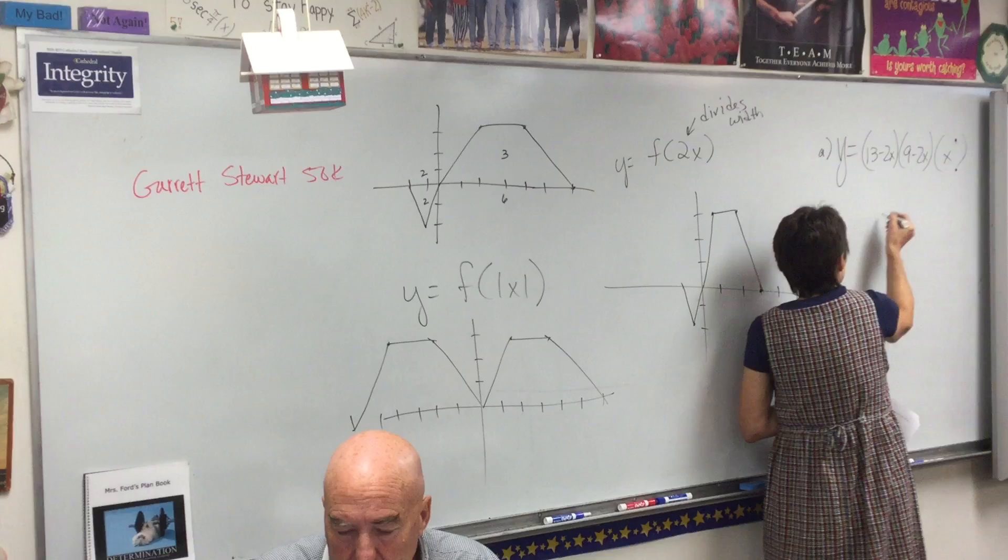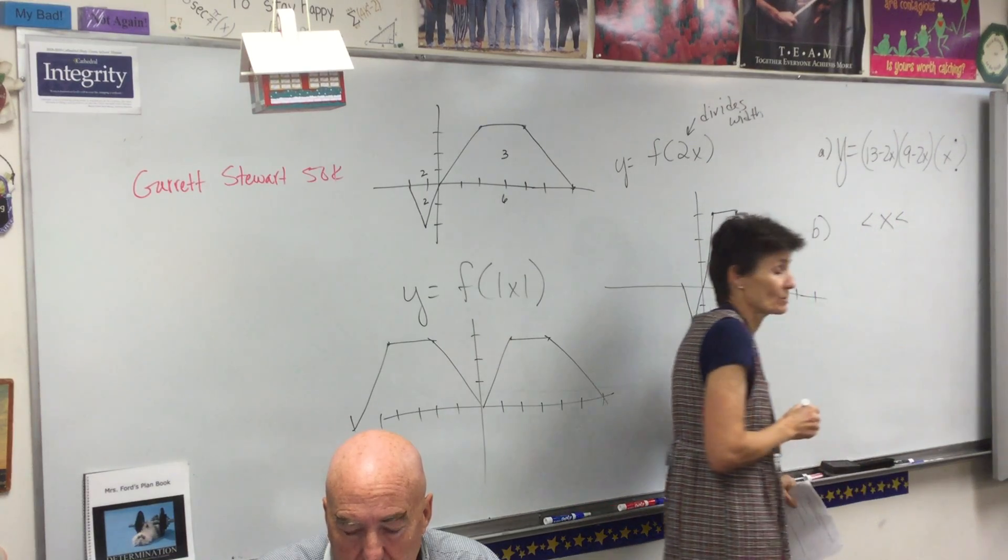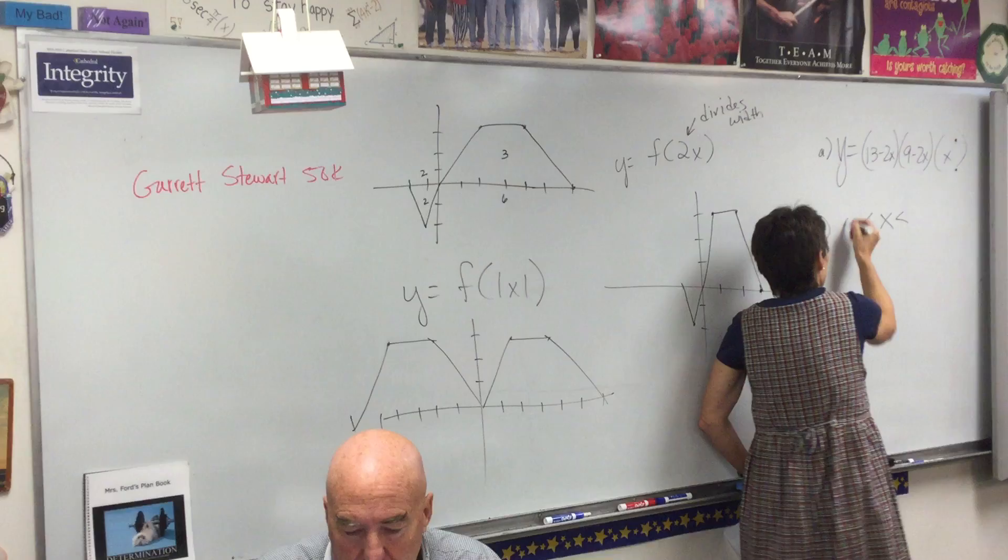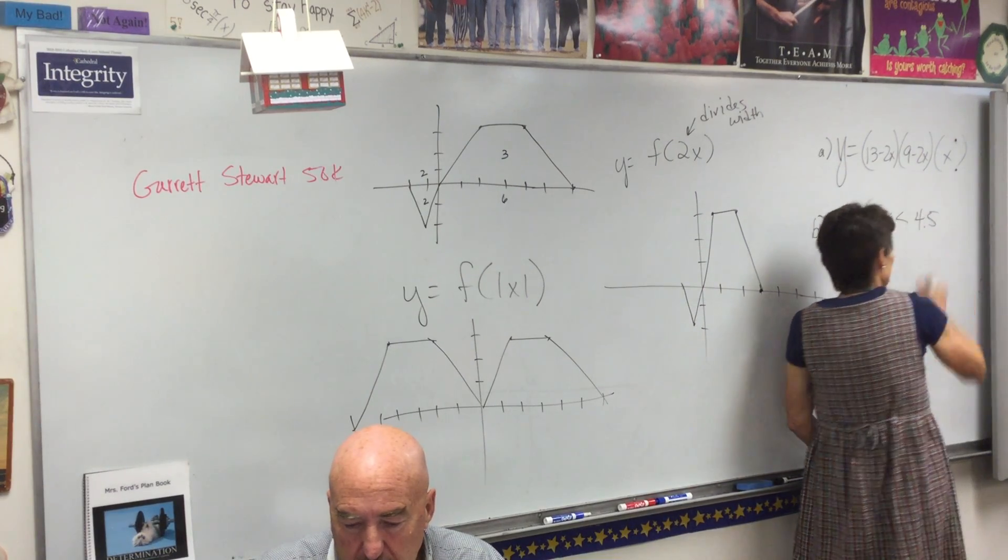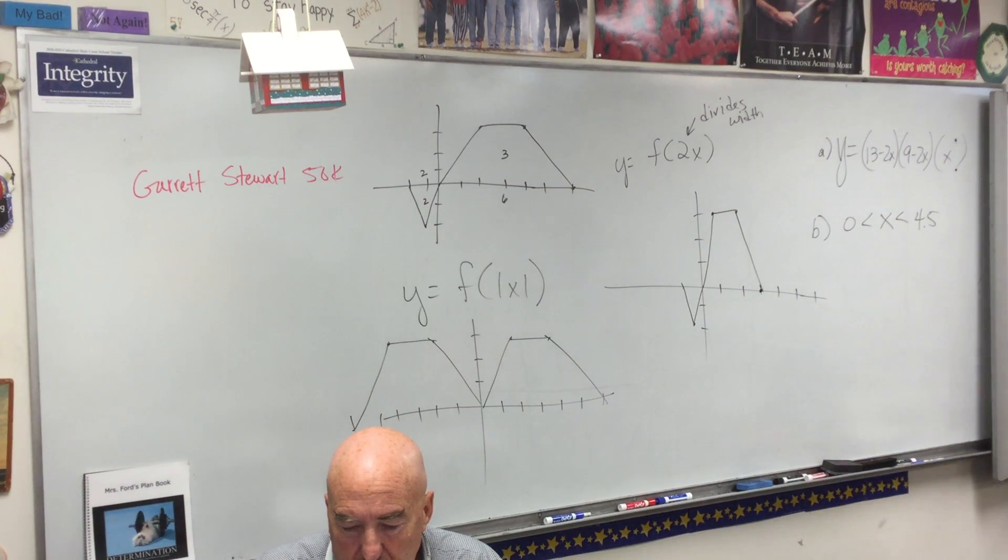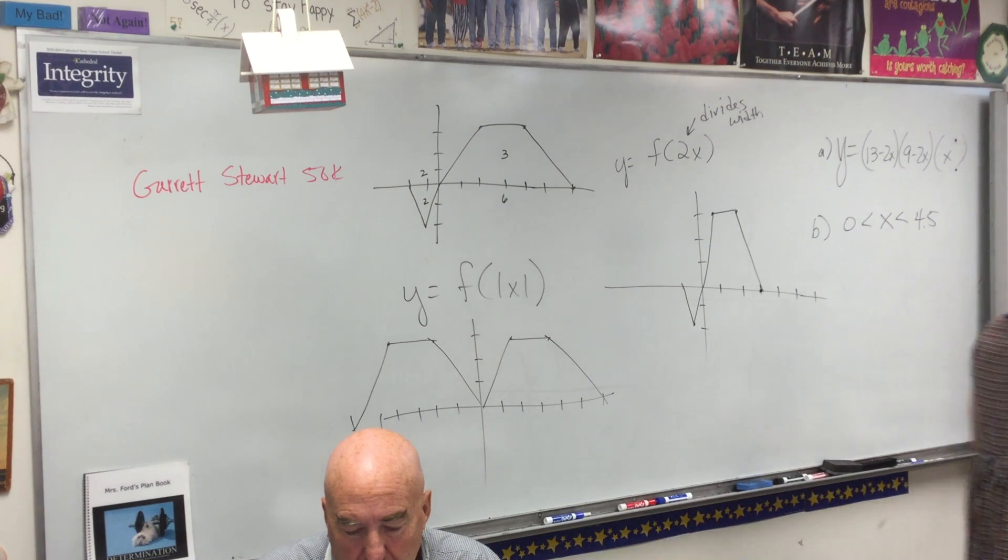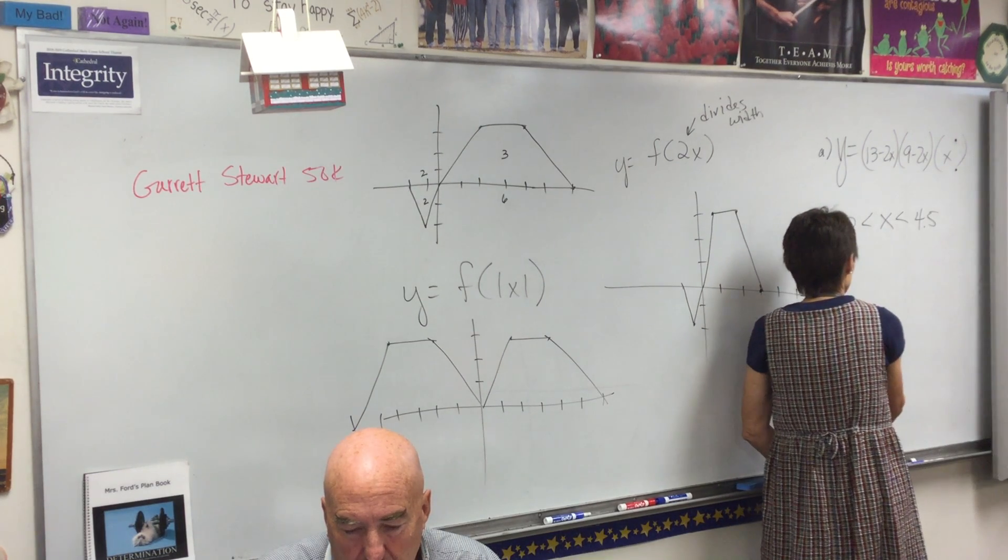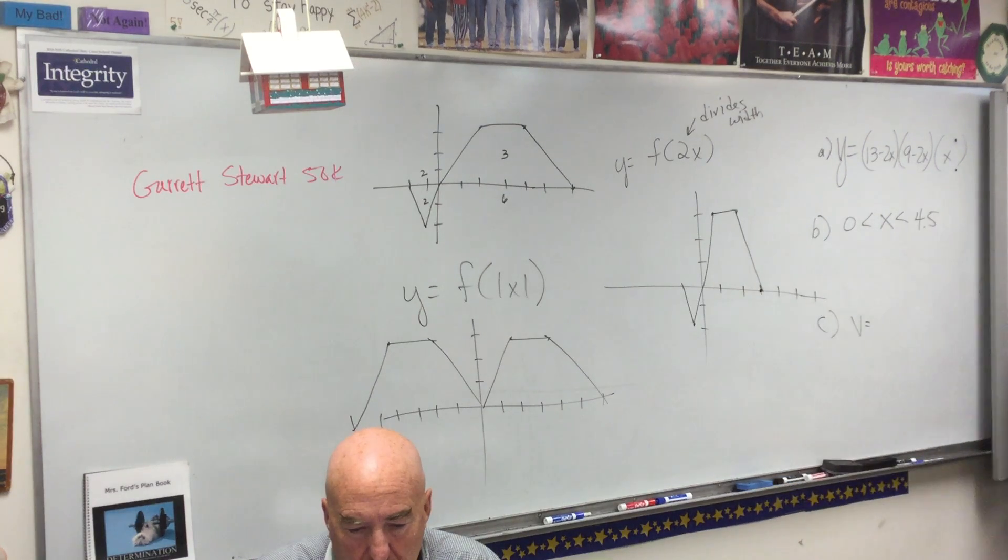Now what is your domain? X is going to be between two numbers. Zero and four and a half. Because your domain in the box problem is always between zero and half the smaller dimension. It's the size of a corner. It can't be less than zero. Okay. And now find the maximum volume of the box. All right. So here you go. Type it in. Let's see what we come up with. What is the maximum volume of the box going to be?